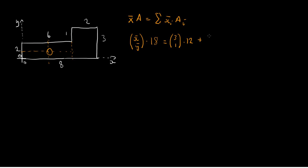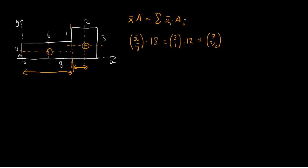It's a summation, so we add the same thing for the second shape. Again, we've got a line of symmetry passing through the centre, so the centroid will be at that point. For the x-coordinate, we have 6 — the distance up to here — plus half of this side, which is 1. So 6 plus 1 is 7. In the y-direction, we just have half of the height of this side, so half of 3 is 3 over 2. The area of this rectangle is 2 times 3, which is 6.